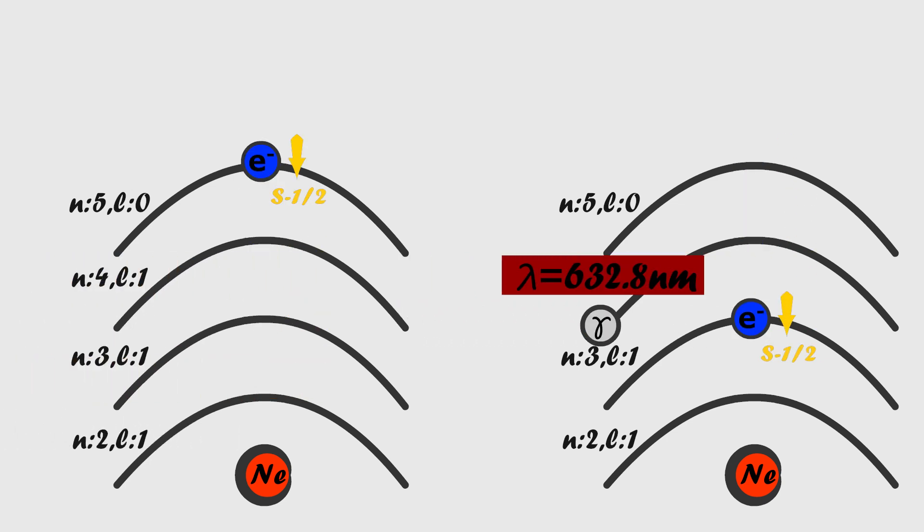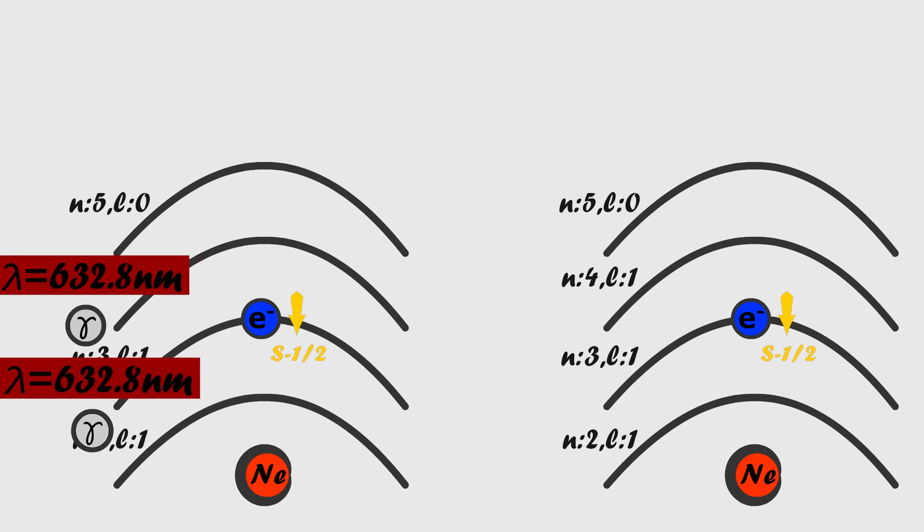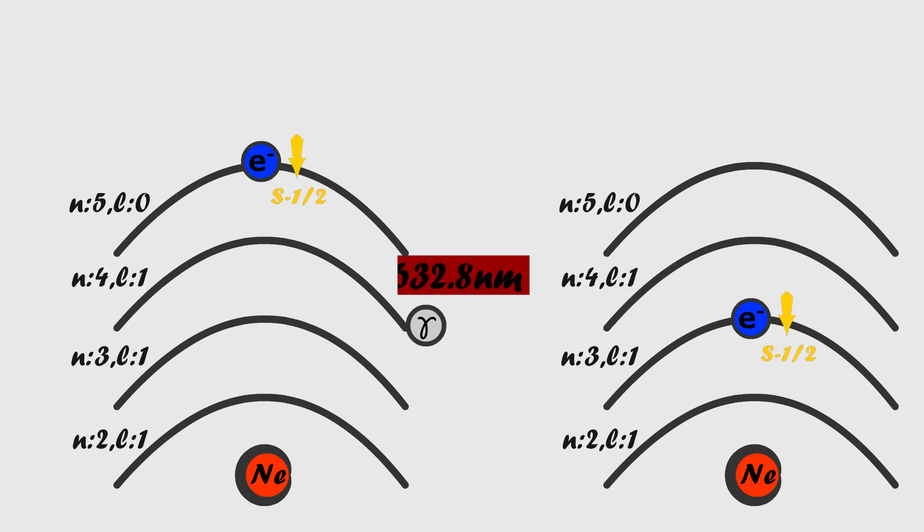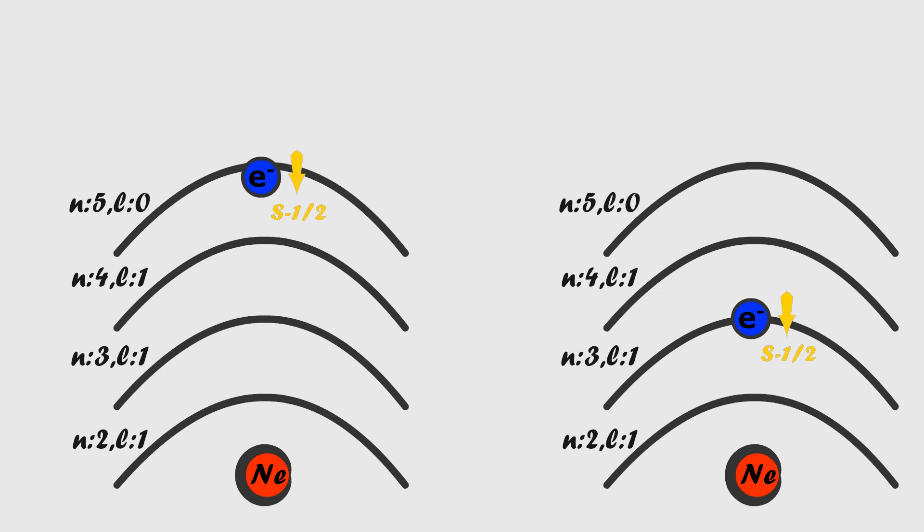Monochromaticity is ensured because the laser-producing atom is neon, which produces electromagnetic waves of the same wavelength. For the same reason, polarization is also achieved.